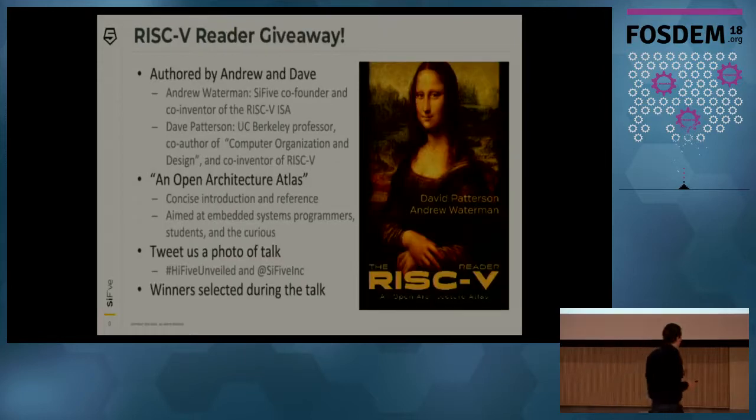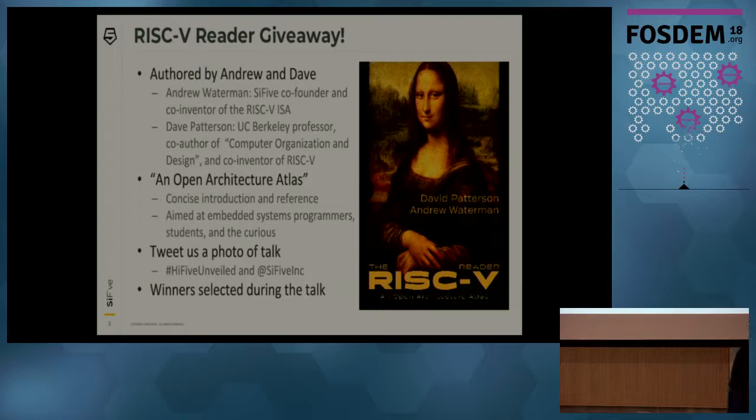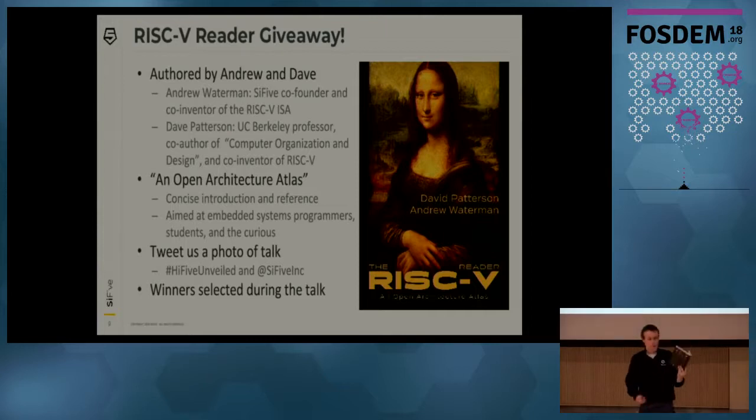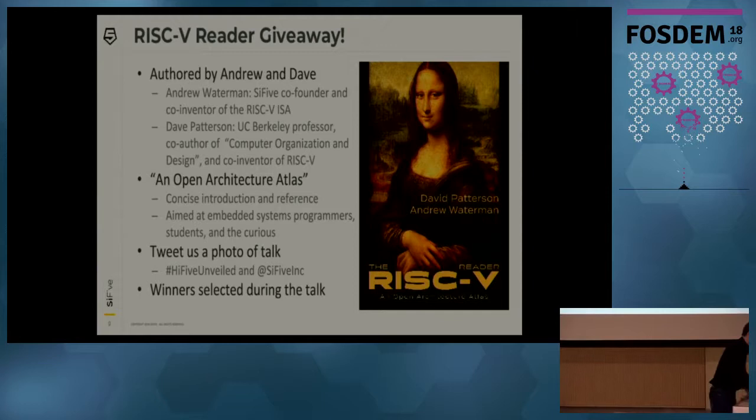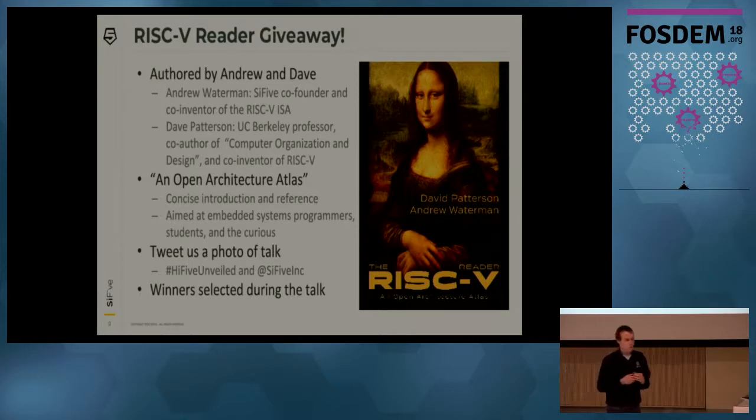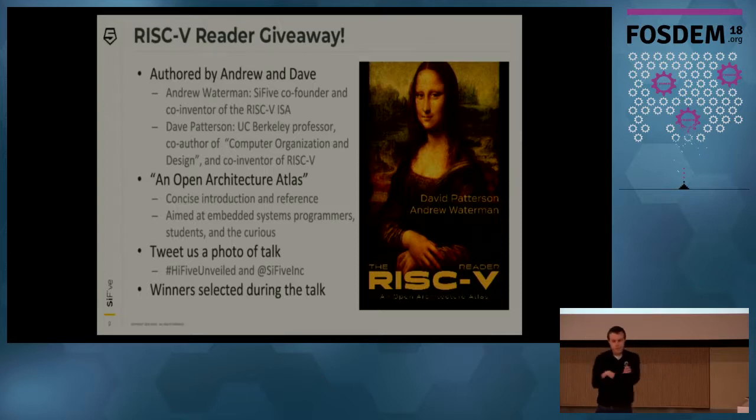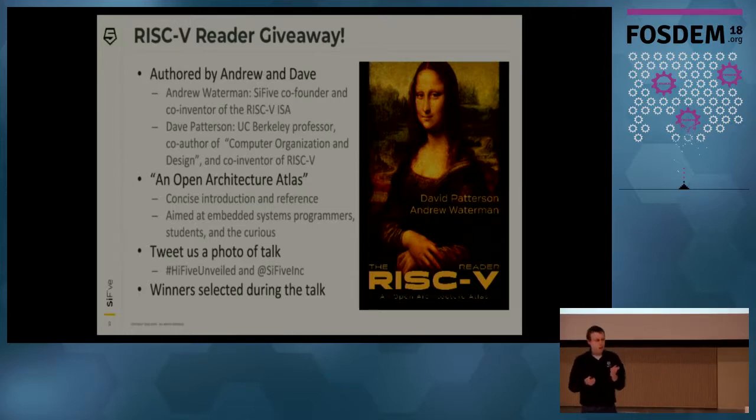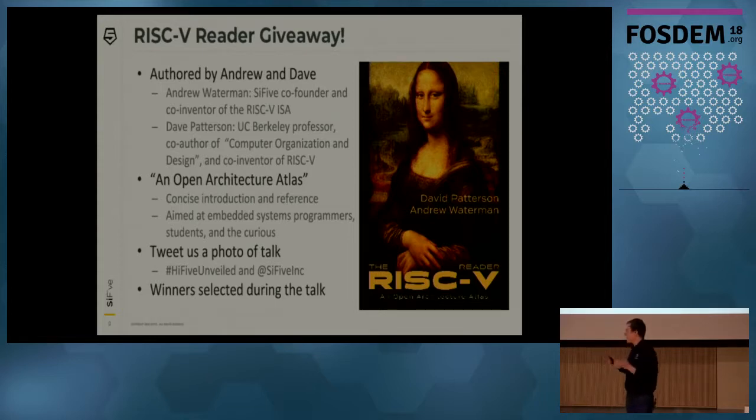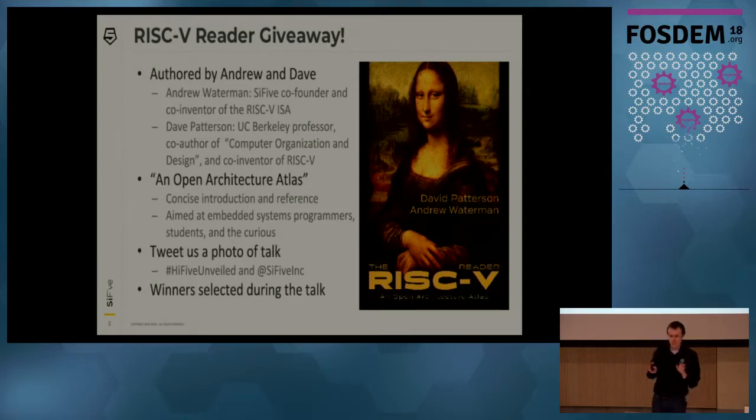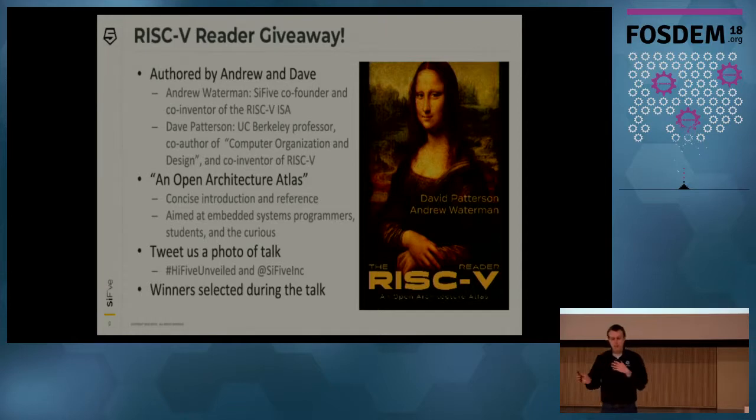For those of you less familiar with the RISC-V ISA, we've written a book, and we're giving away signed copies. The book was written by Andrew Waterman and Dave Patterson, a professor at UC Berkeley. It's titled An Open Architecture Atlas, and it's designed as an introduction to the RISC-V ISA. If you want to get your copy of the book, tweet a photo of the talk with hashtag HiFive Unleashed and at SiFive Inc. We're going to select the winners during the talk. We have 10 books.